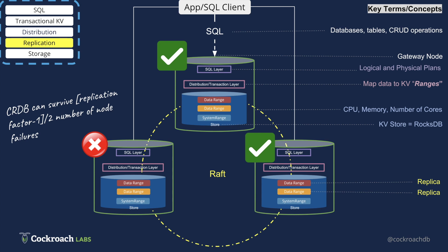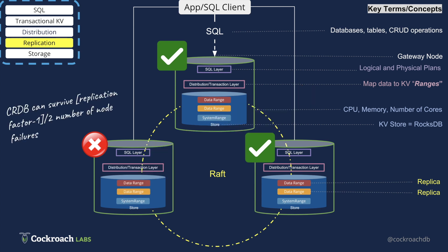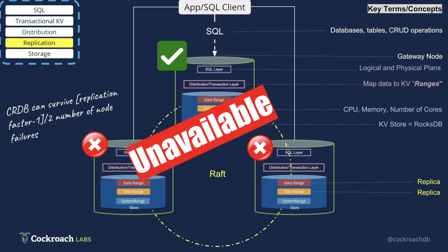In that case, the ranges are under-replicated but still available. Now, if one more node goes down, then the quorum is not met and the ranges become unavailable.